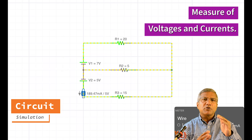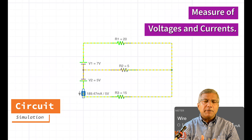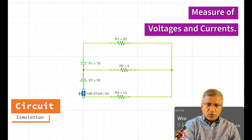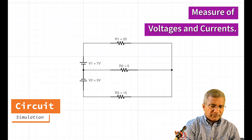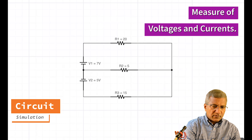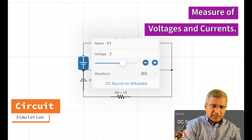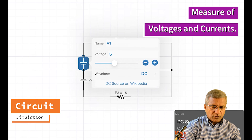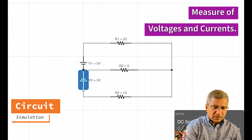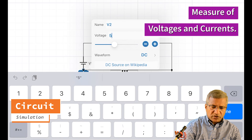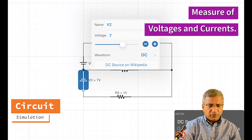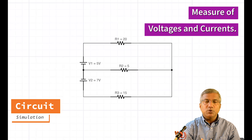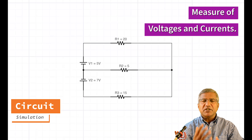But we have to repeat this lab with the sources switched. That means we're going to change V1 from 7 volts to 5 volts, and V2 from 5 volts to 7 volts. So now V1 is 5 volts and V2 is 7 volts. Let's measure those quantities again.